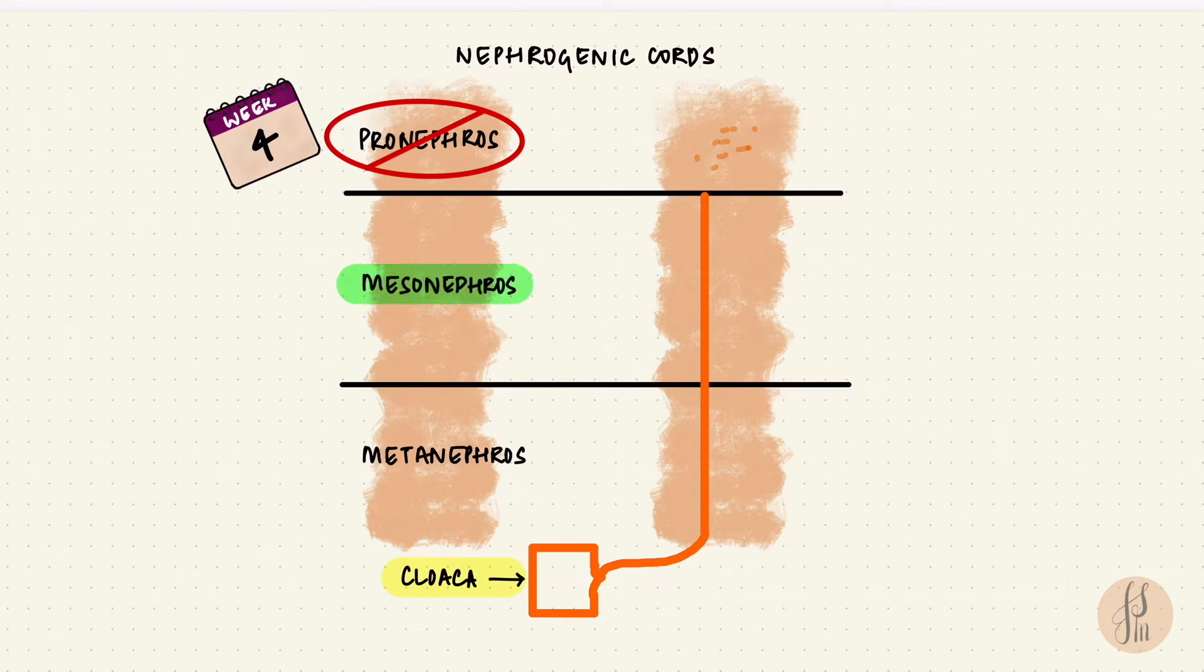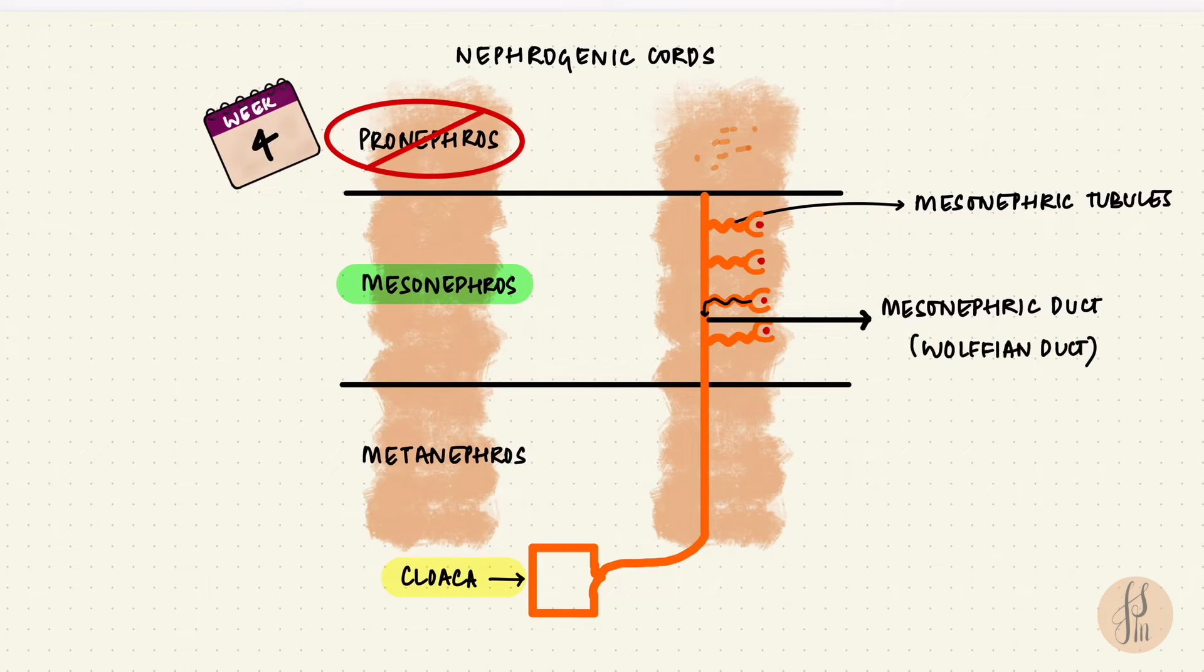And now we're on to stage two, the mesonephros. This appears late in the fourth week. They have mesonephric tubules, which are like primitive versions of renal tubules. And these are associated with capillaries. That's a glomerulus. That means they can perform filtration. And they drain into the mesonephric duct, also called the Wolffian duct. Again, that opens into the cloaca.